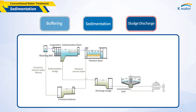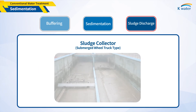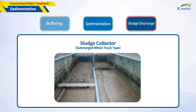Sludge is formed when flocs from the mixing and coagulation process settle by gravity, and is removed and transferred to a discharge system for treatment. Generally, a sludge collector is installed at the bottom of the settling basin to remove sludge. If sludge is not discharged properly, sedimentation cannot be performed properly. This process is very important.